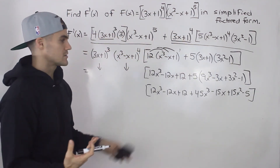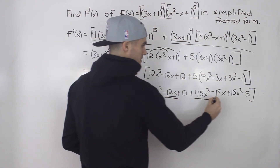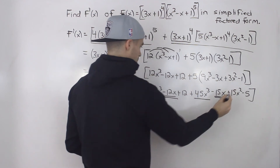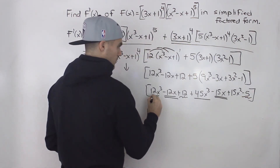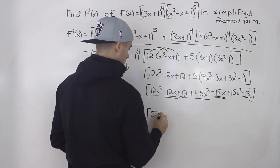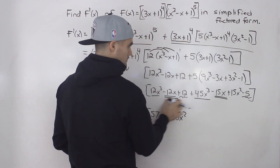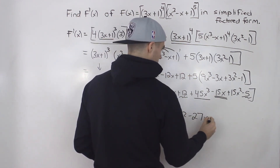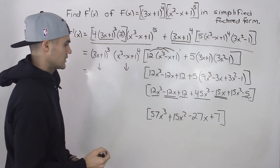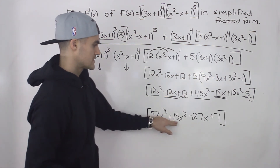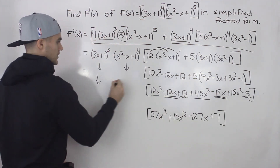Now we collect the like terms. 12x cubed plus 45x cubed gives 57x cubed. The 15x squared is by itself. Negative 12x minus 15x gives minus 27x. And 12 minus 5 gives 7. So the remaining bracket is 57x cubed plus 15x squared minus 27x plus 7. We check whether anything factors out — a 3 divides the first three terms but not the 7, so this bracket is as simplified as it gets.